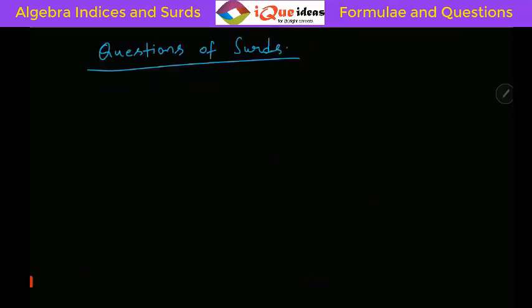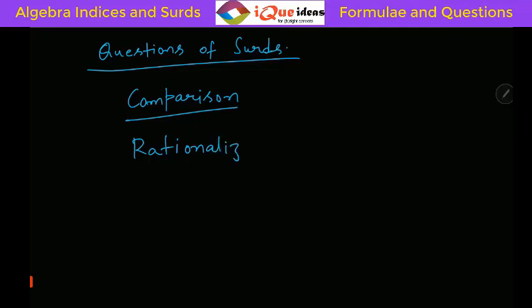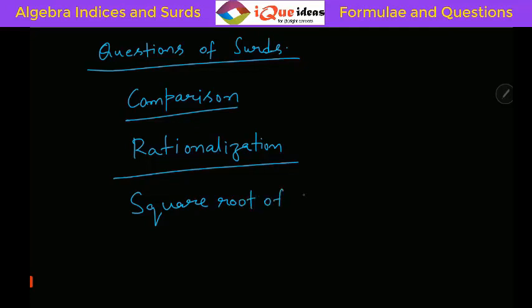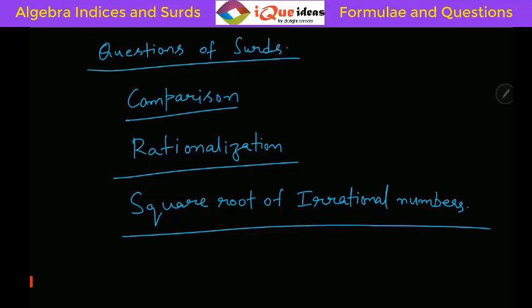Now let us take up some questions on surds. The questions on surds can be divided into three categories. The first category is questions related to comparison. The second category will be based on rationalization of irrational numbers. The third category is based on finding the square root of irrational numbers. Now let us take them one by one, starting with questions related to comparison.